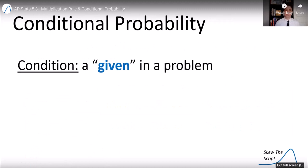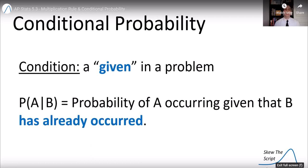Now, let's talk about conditional probability. A condition is a given. When you see condition, think given in a problem. The way we notate it in probability is with this vertical line. So P(A|B) means the probability of A occurring given, so the vertical line is a given, that B has already occurred or, you know, for sure will occur.